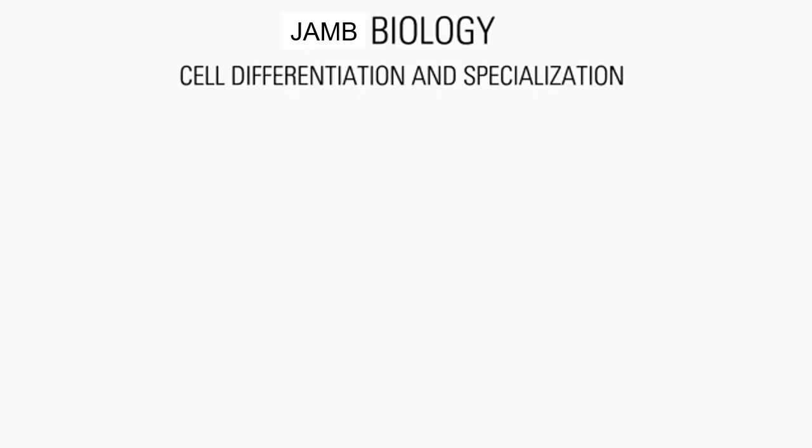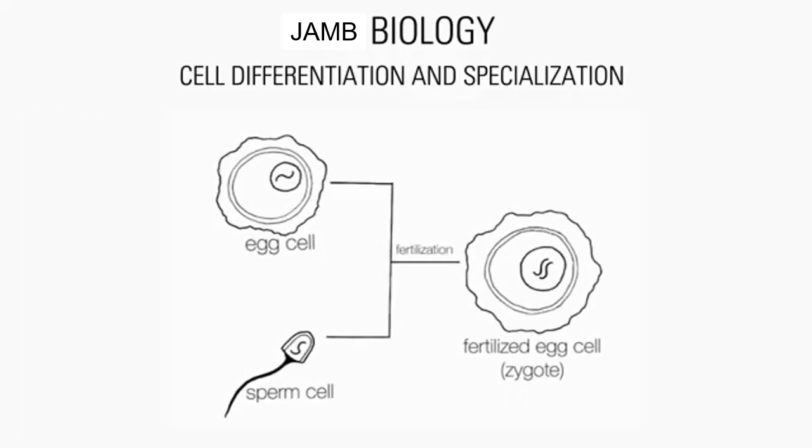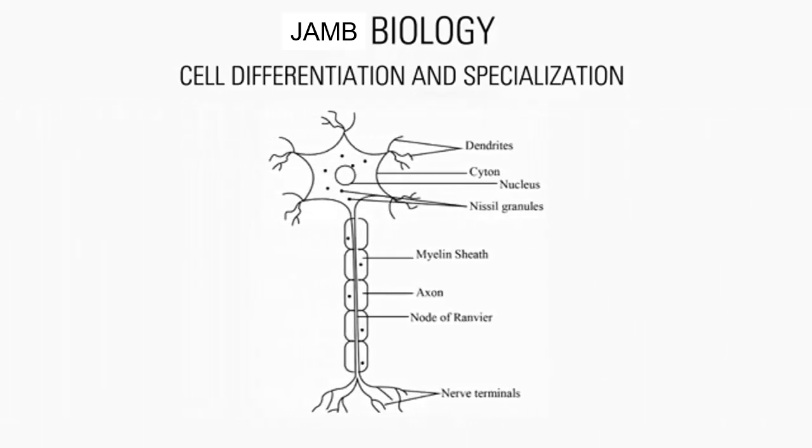Now let's consider specialized cells in detail. For animals, we have the sperm and ova, which are specialized for reproduction. We also have nerve cells, which are specialized for cell signaling.